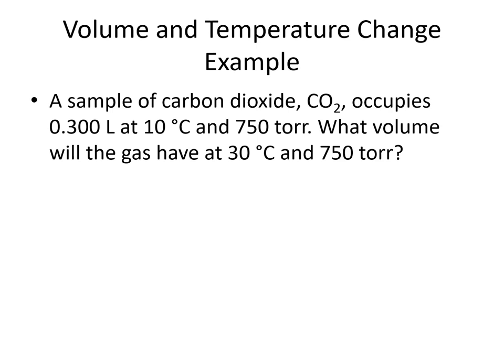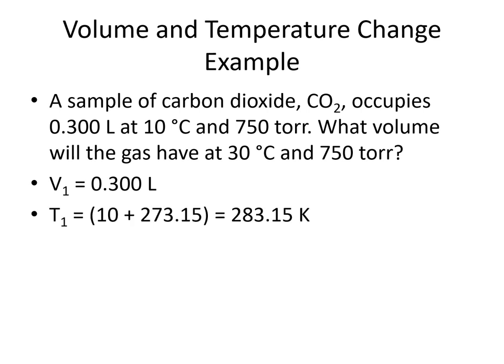Here's an example calculation. We have a sample of carbon dioxide that takes up 0.300 liters at 10 degrees Celsius and 750 torr. The question is what volume will the gas have at 30 degrees Celsius and 750 torr. The 750 torr just tells us pressure is being held constant, so Charles's law applies. V1 = 0.300 L; T1 = 10 + 273.15 = 283.15 K; T2 = 30 + 273.15 = 303.15 K.